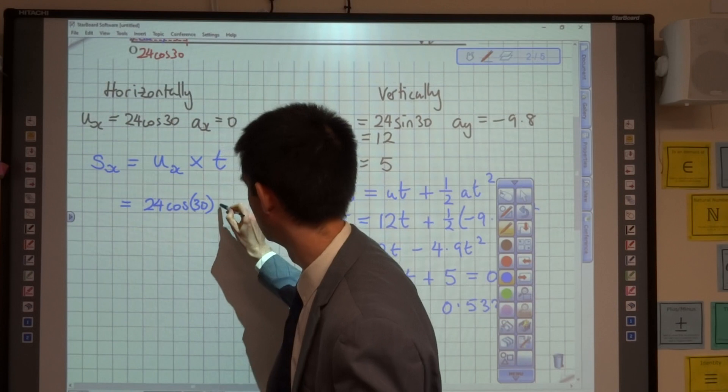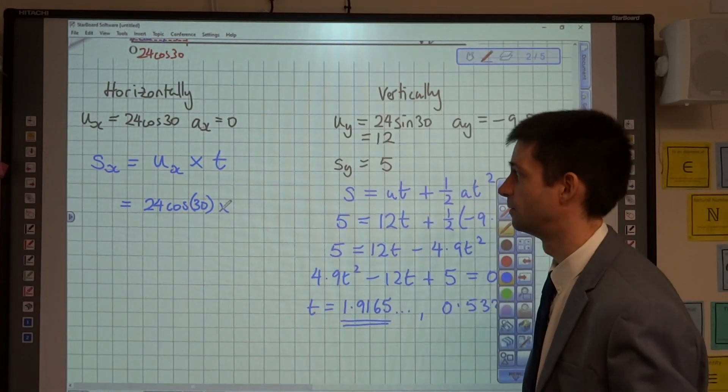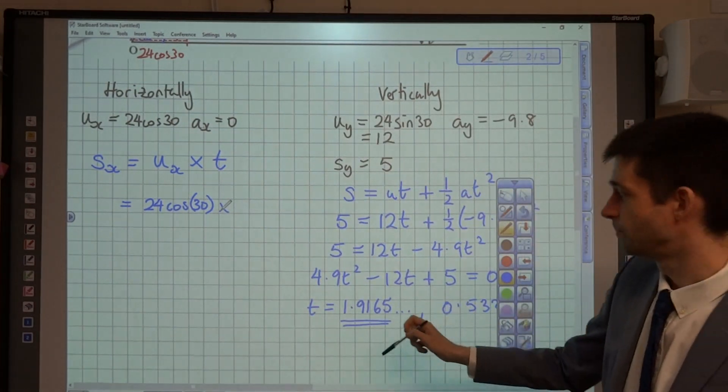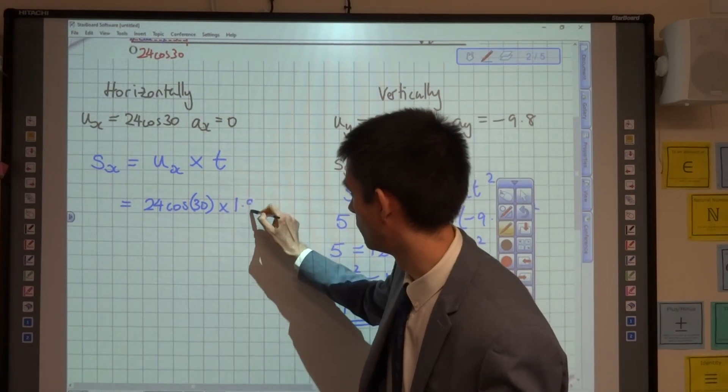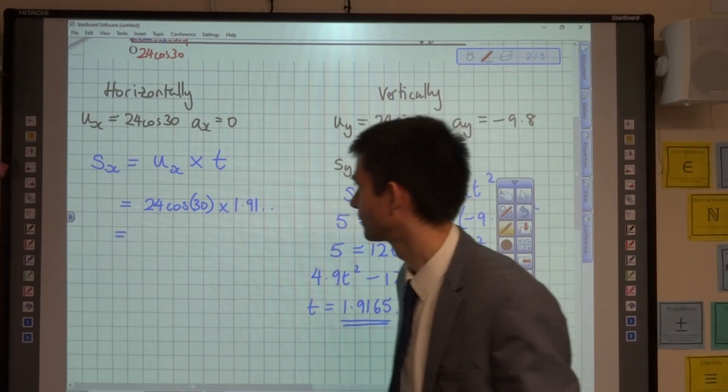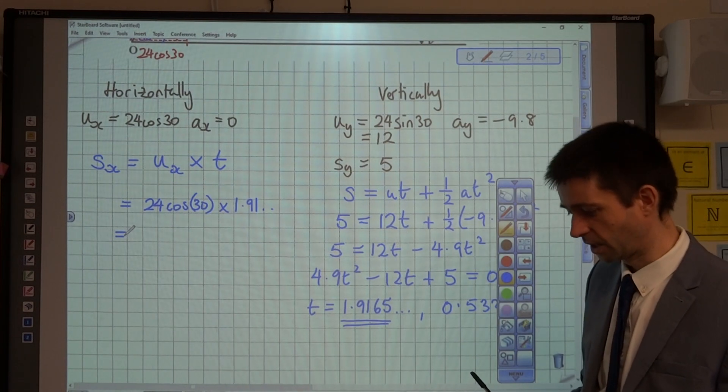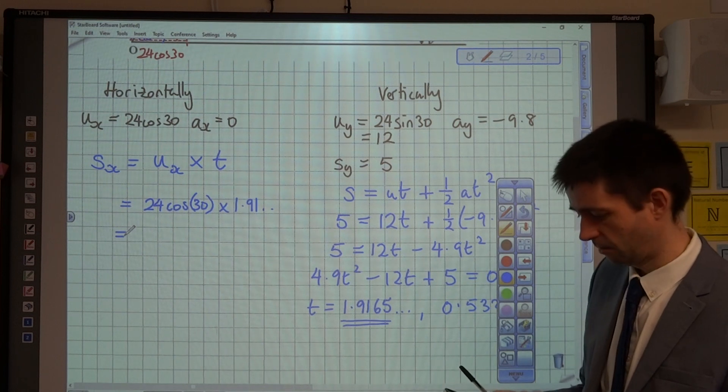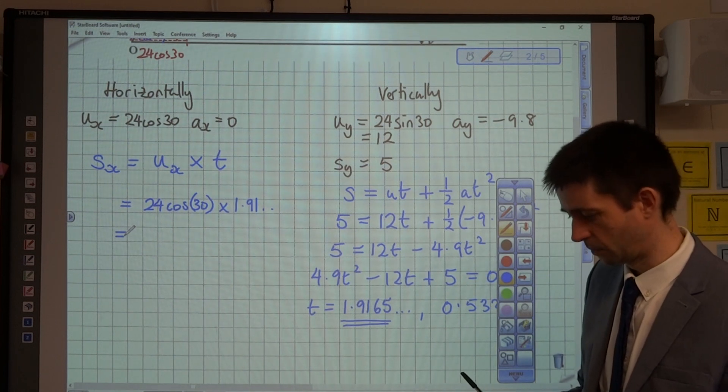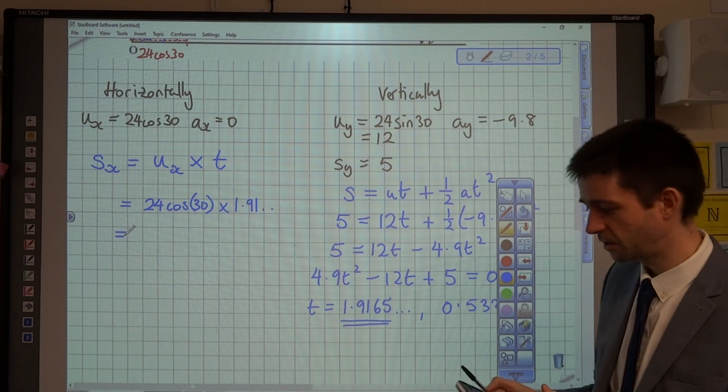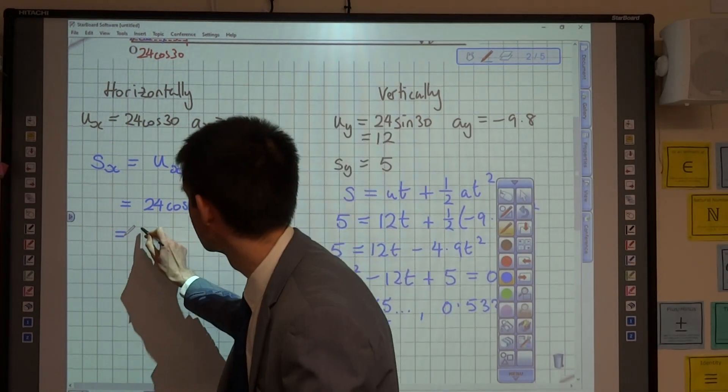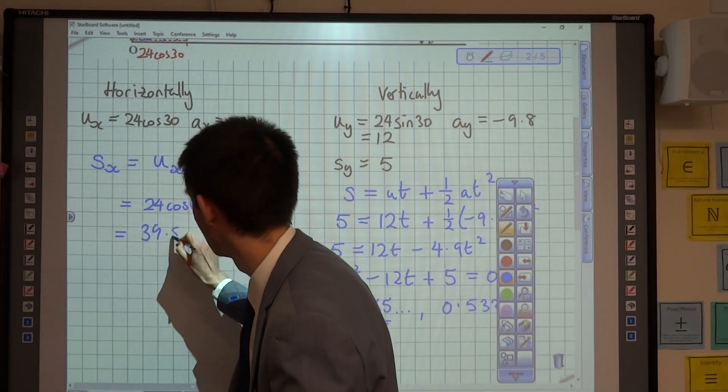What we can just do here is we can say that it's 24 cos 30, which is our horizontal velocity, multiplied by time, which we've now found to be that 1.91 there. So I stored that in my calculator, so what I'm now going to do is go back into normal function and do that value multiplied by 24 cos 30, making sure you're in degrees mode, and it comes out as 39.835.